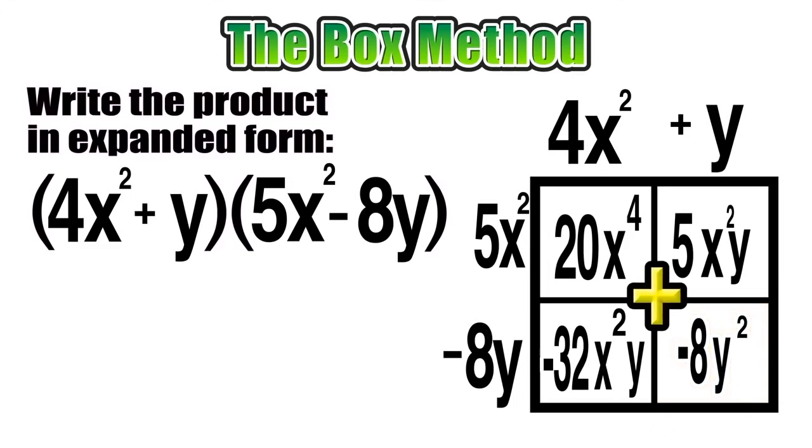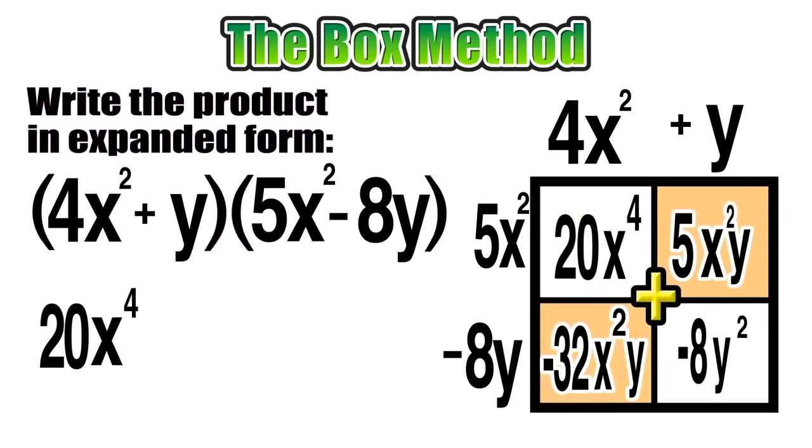Okay, so now we are done with the hard part of filling in the inside of our box. Just like the last example, now we want to find the sum of those four terms, see if we can simplify, and end with a product in expanded form. Let's start out with our first term, 20x to the fourth power.